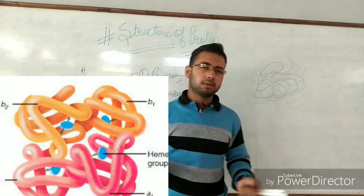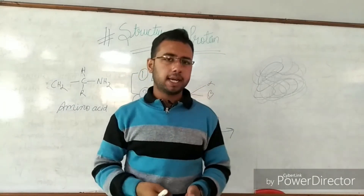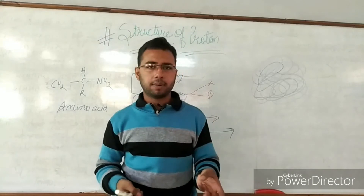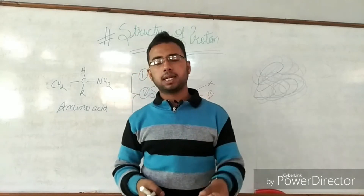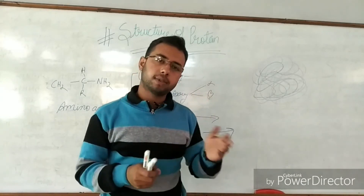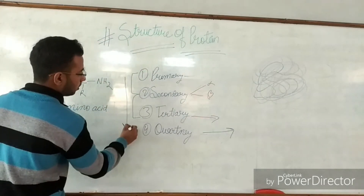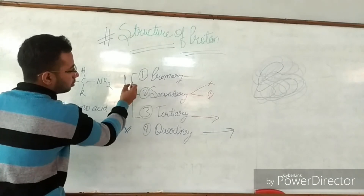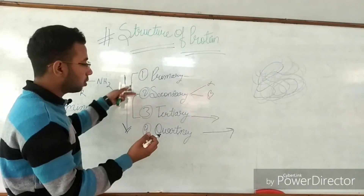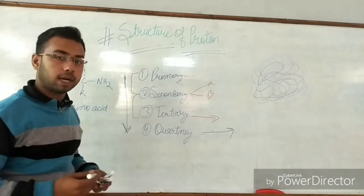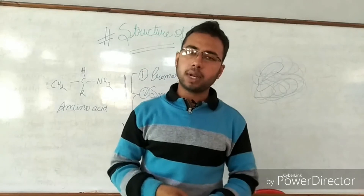To summarize: there are four types of protein structure — primary, secondary, tertiary, and quaternary. Primary makes the secondary, secondary makes the tertiary, and tertiary makes the quaternary. They are in increasing order of complexity: primary is least complex, secondary is more complex than primary, tertiary is more complex than secondary, and quaternary is the most complex.